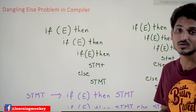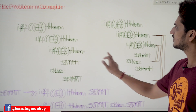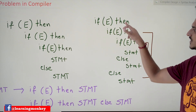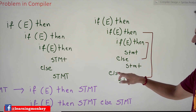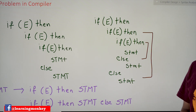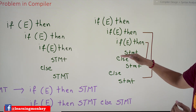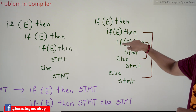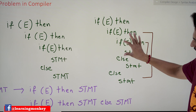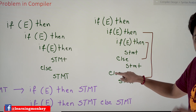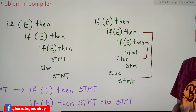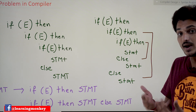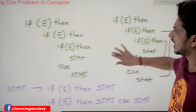Take one more example: if expression then if expression then if expression then if expression then statement else statement else statement. We are having two else statements. This else is matched to the nearest unmatched if. So the first else belongs to the second if, and the second else belongs to the nearest unmatched if before it. This is how programming languages work.